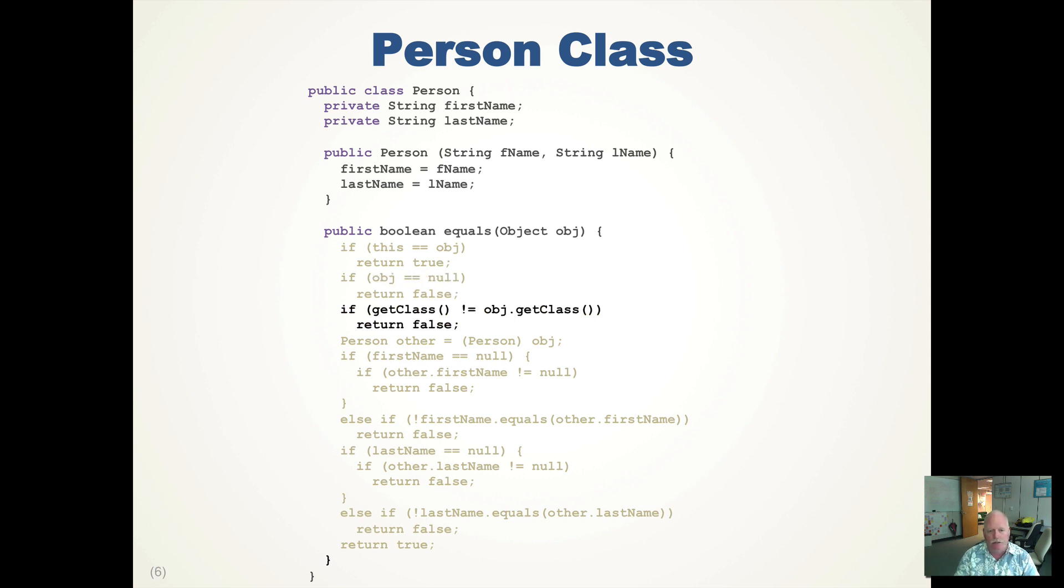The next step is we now check to see is the class type of this the same as the class of the object, which it should be person. So if get class returns person and it's not equal to the object's class, then we know that there are different classes and we return false.